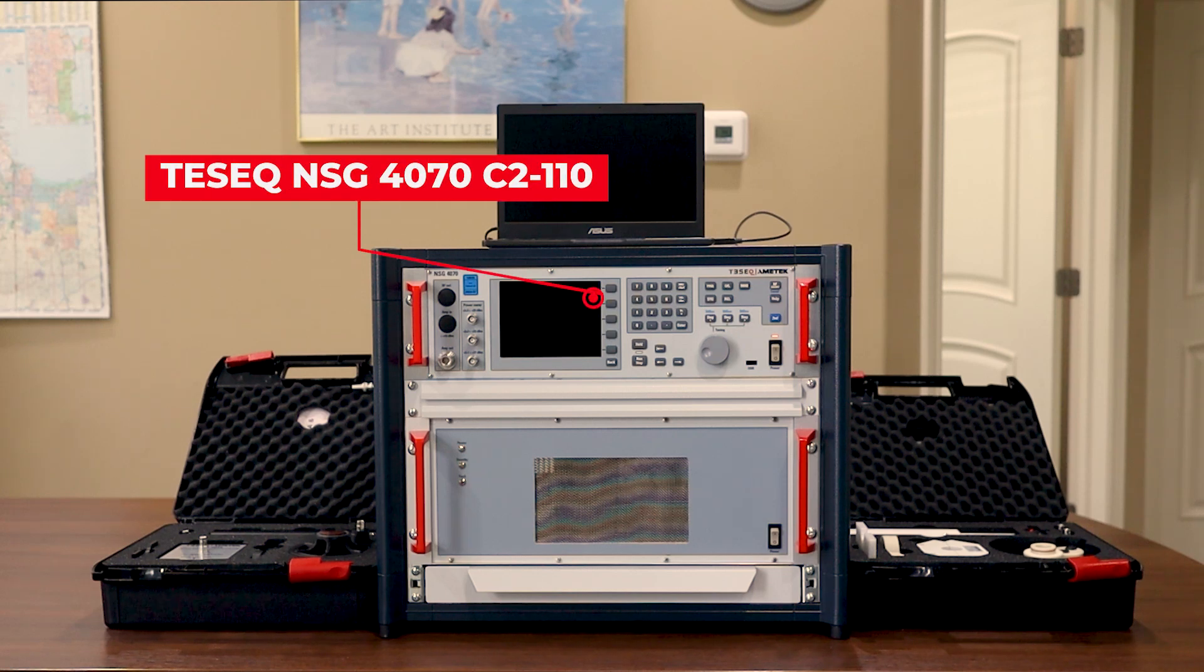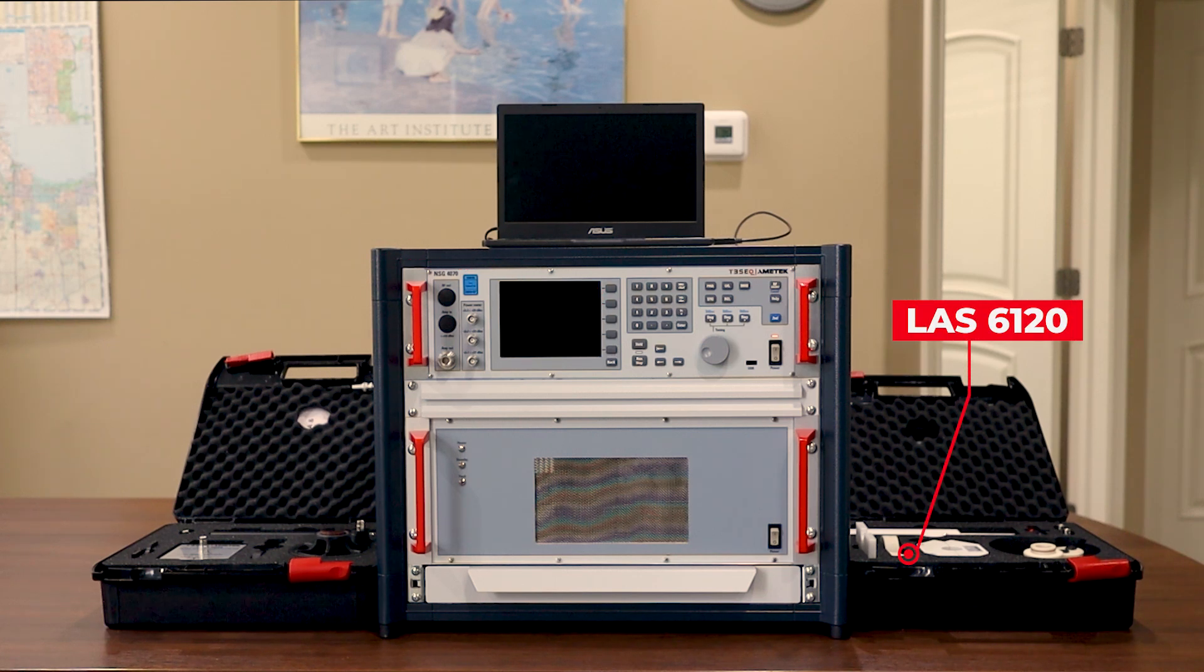During today's video we're going to be using the TESEC NSG4070C2-110 test system with the TESEC LAS6120 and 6100 antenna kits. The NSG4070C2-110 can be used for this test and has a built-in amplifier meeting the test level requirements. In many situations however, the NSG4070C-LFCP is also used. We're going to be using the ICD.control software for today's video, which we'll take a closer look at later.